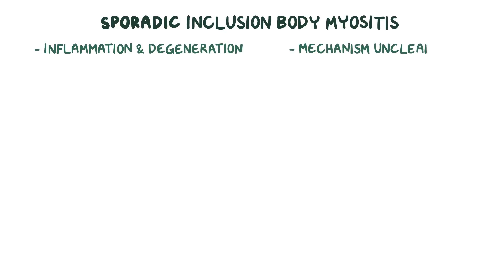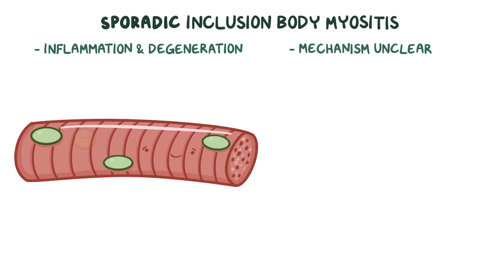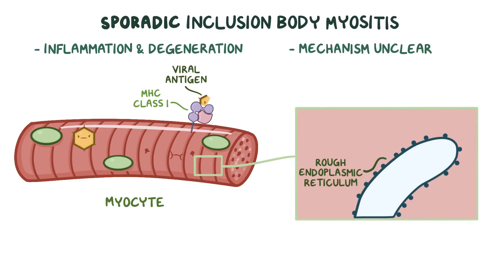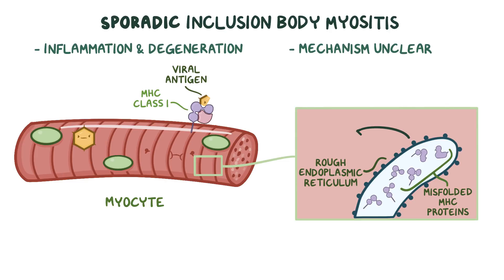Now in sporadic inclusion body myositis, there are features of inflammation and degeneration. The exact mechanism is unclear, but one thought is that the trigger may be a virus that infects and damages myocytes. In response, the muscle cells start to present viral antigens on their MHC class 1 proteins. The rough endoplasmic reticulum of the myocytes fills up with these MHC class 1 proteins, and some begin to misfold. The misfolded proteins begin to aggregate, causing additional degeneration and destruction of muscle fibers.